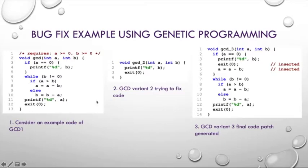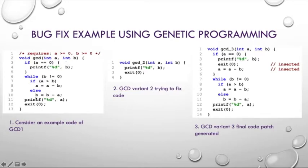Now let me explain with an example how Genprog works. Human repairs often involve inserting new code and deleting or removing existing code, and Genprog uses those same building blocks to search for repairs automatically. Consider Euclid's greatest common divisor algorithm. This program has a bug: when A is 0 and B is positive, it loops forever on lines 6 to 10.